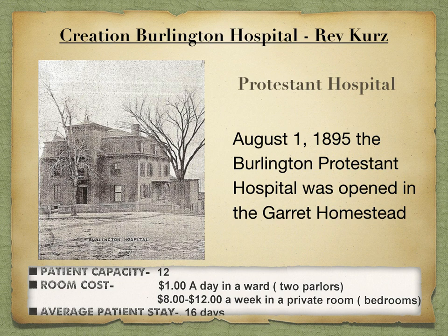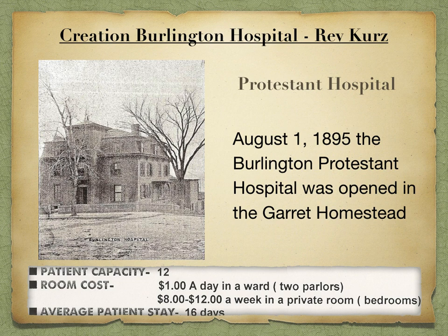In 1894, Zion and St. Luke's congregation discussed establishing a Protestant hospital. As a result, Reverend Kurtz, Zion's pastor at the time, called a meeting of the pastors of the seven current German churches in Burlington to consider establishing a Protestant hospital. On January 14, 1895, the hospital association was organized. On August 1, 1895, the Burlington Protestant Hospital was opened in the Garrett Homestead at the corner of 6th and Columbia. Today, we know that as the Phillips House at the top of Snake Alley.